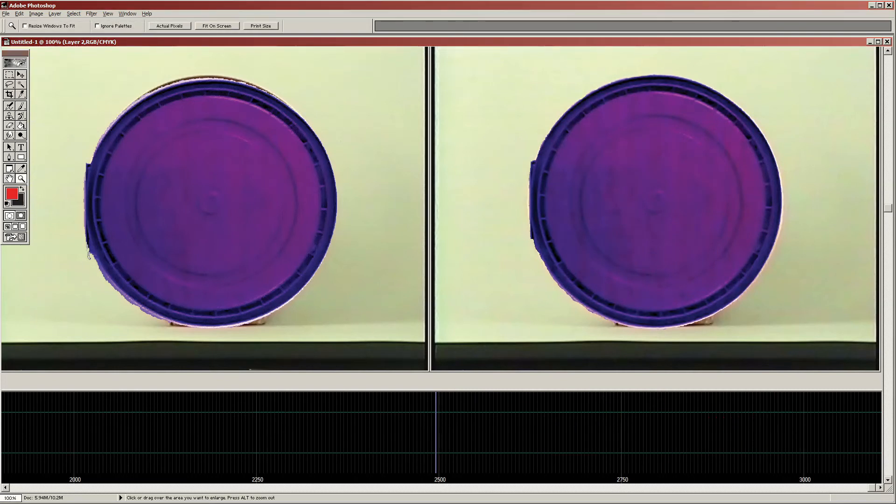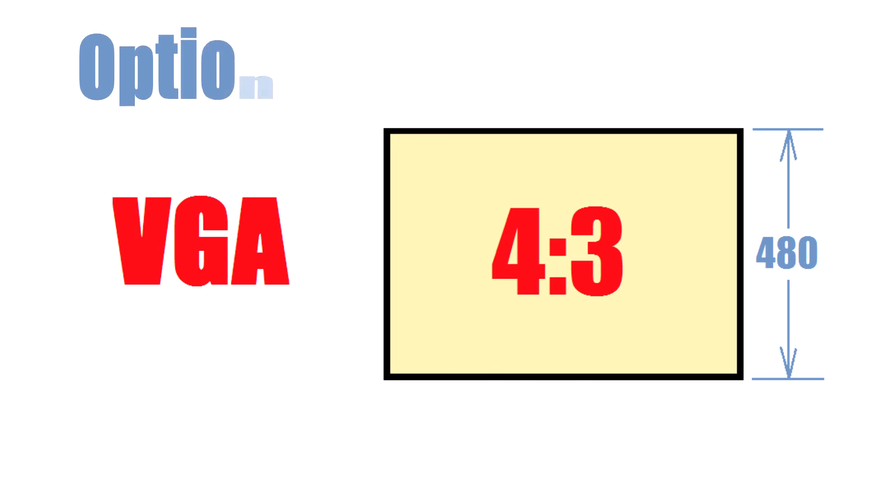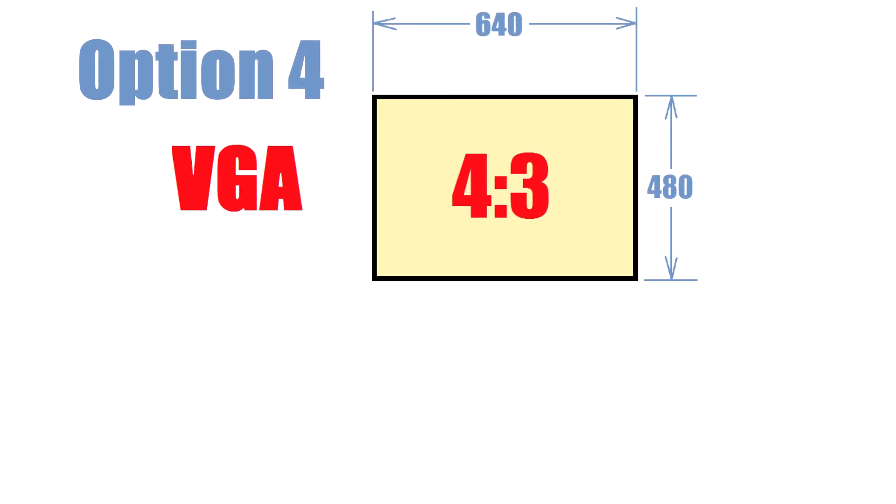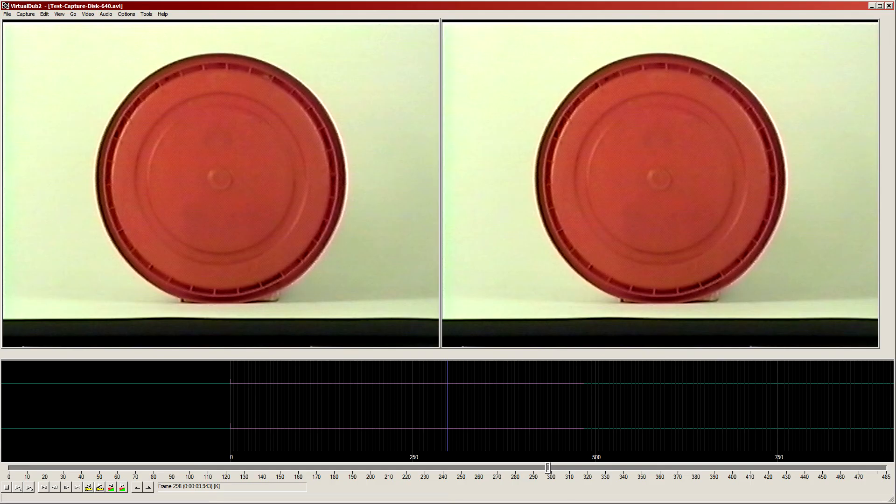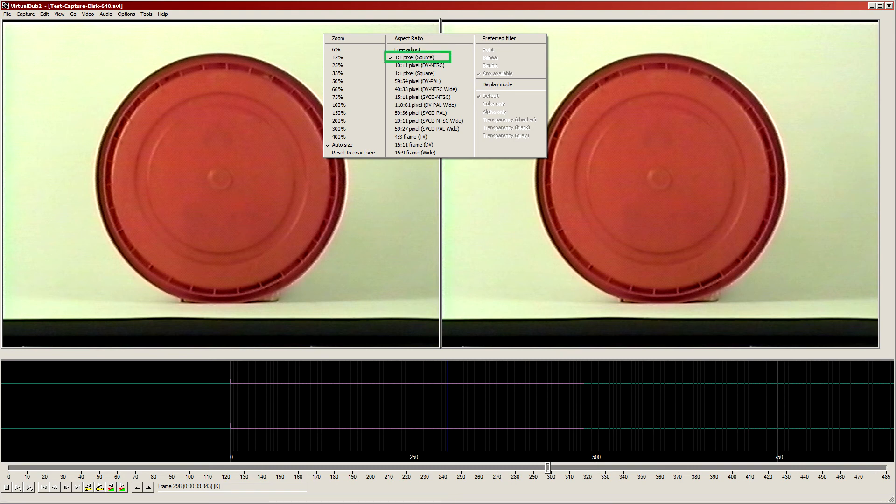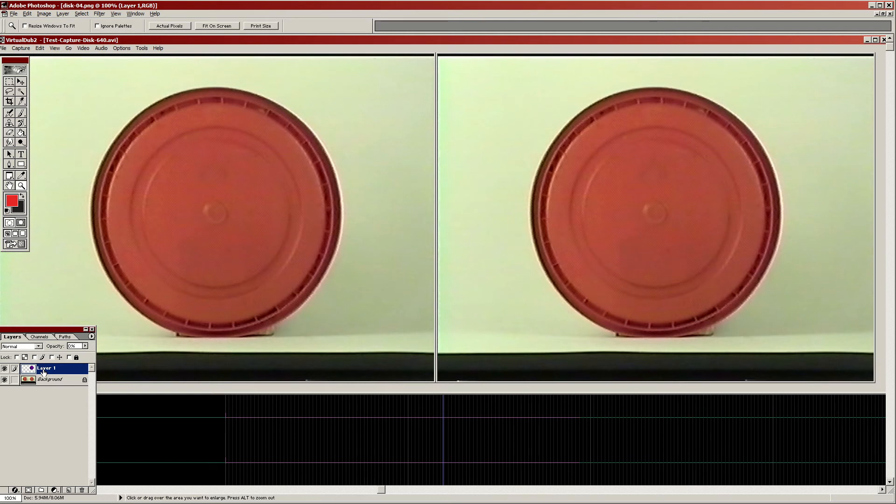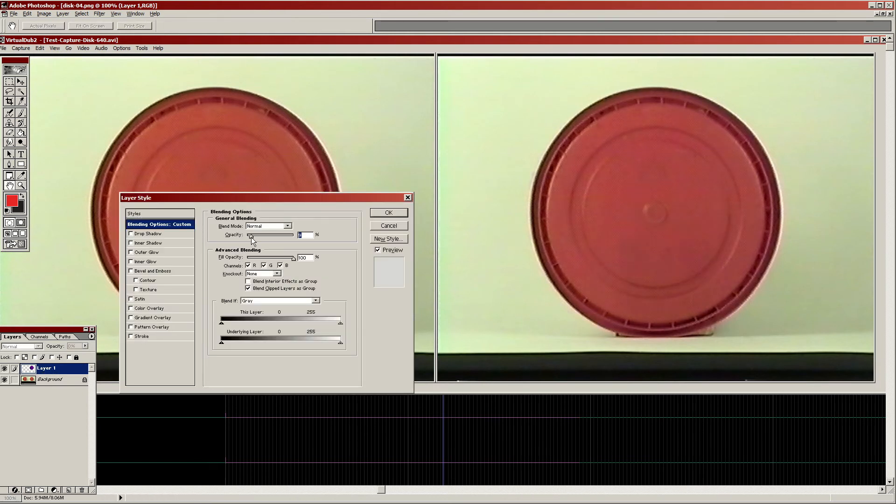If all this seems too complex, there is option 4. VGA is a computer standard that was introduced by IBM in 1987. It captures all of the scan lines of NTSC video and its horizontal resolution is more than enough to faithfully represent broadcast quality TV or SuperVHS video. The best of all, it uses square pixels. Notice that black borders have been removed automatically, confirming the result of the prior test that they do not belong to the active frame area.